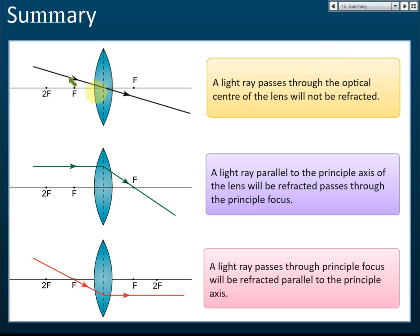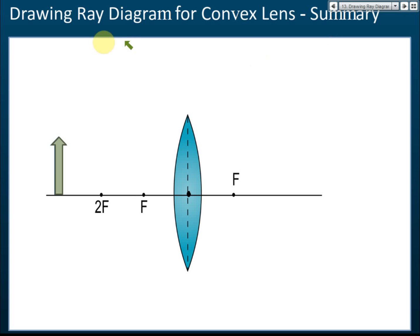So these are the three rules for drawing ray diagrams. Summary: passes through optical center — no refraction; parallel to principal axis — passes through principal focus; passes through principal focus — parallel to principal axis. You only need to apply two of the three rules to draw the ray diagram and find the image — the position and size of the image.